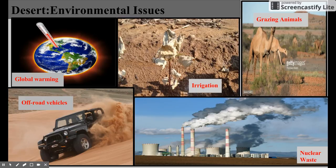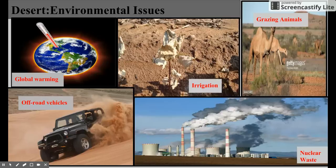Welcome back to part two of the desert biome. There are some environmental issues that can affect the desert biome. Global warming — which some people think is an issue and some do not — is increasing the amount of deserts found on our land. It will cause extreme droughts which can convert a grassland to a desert.